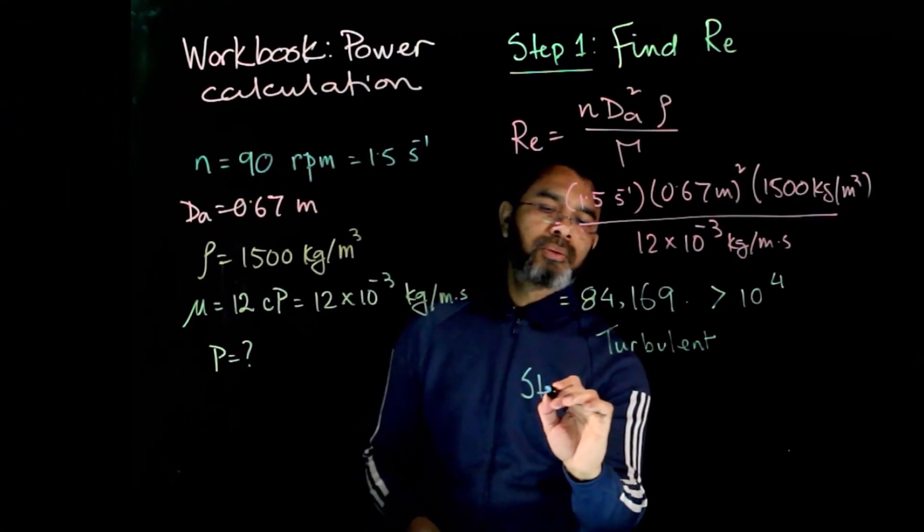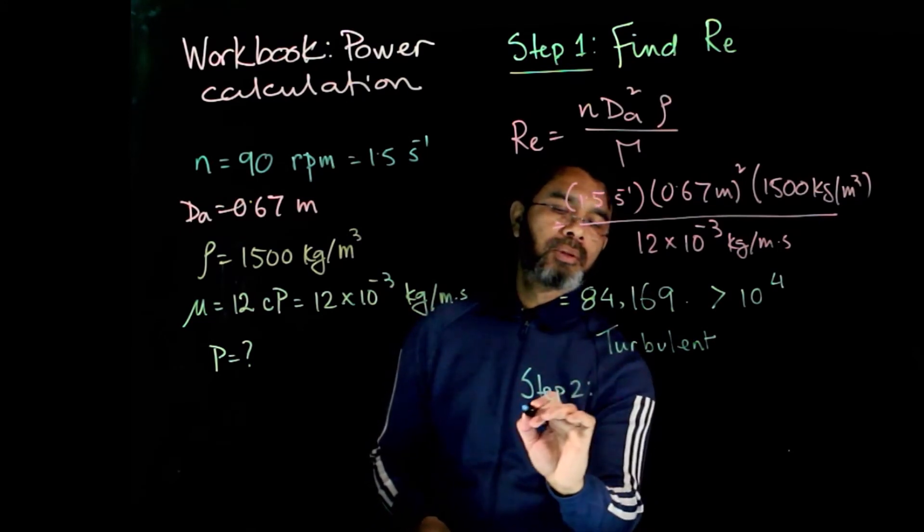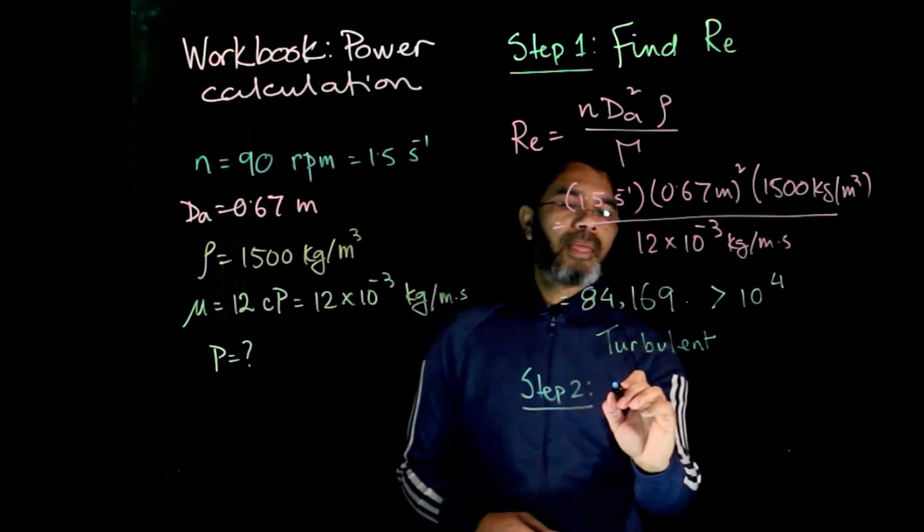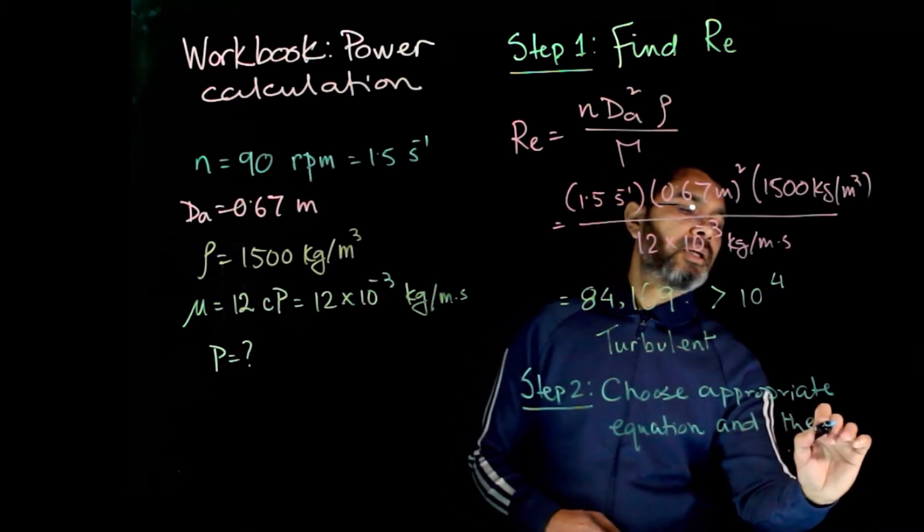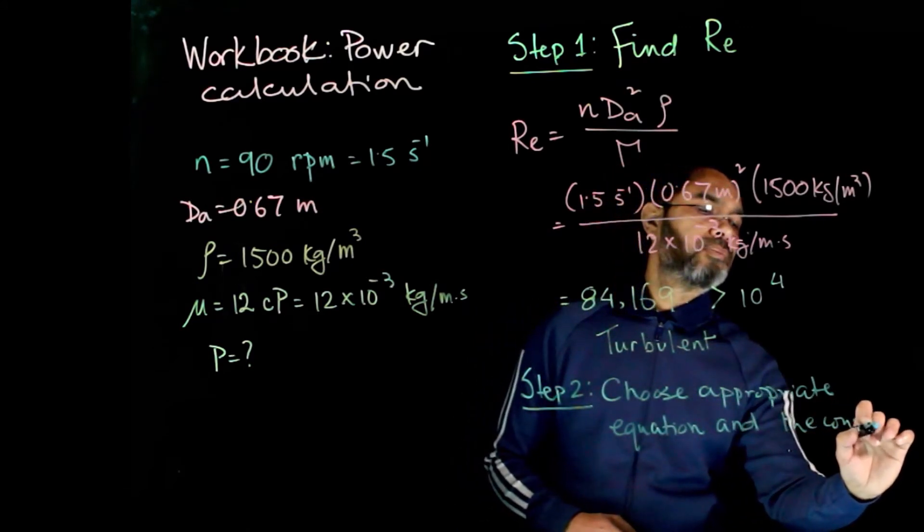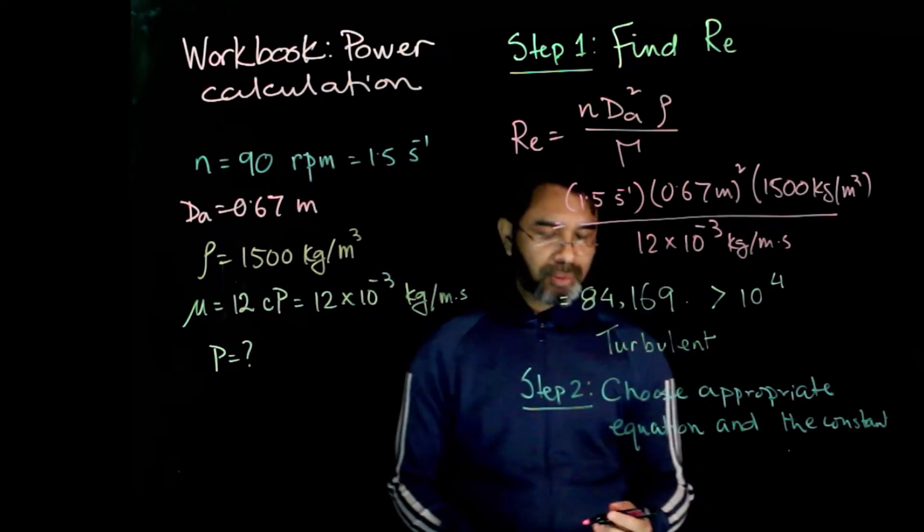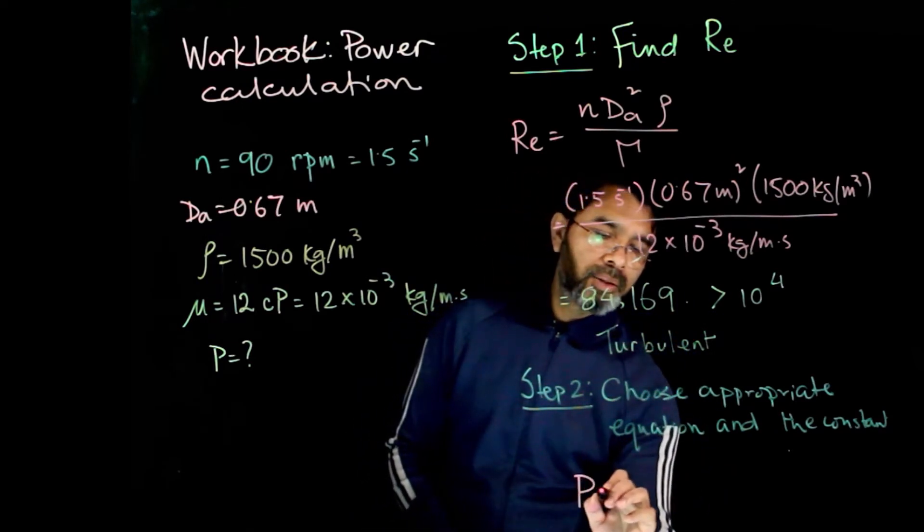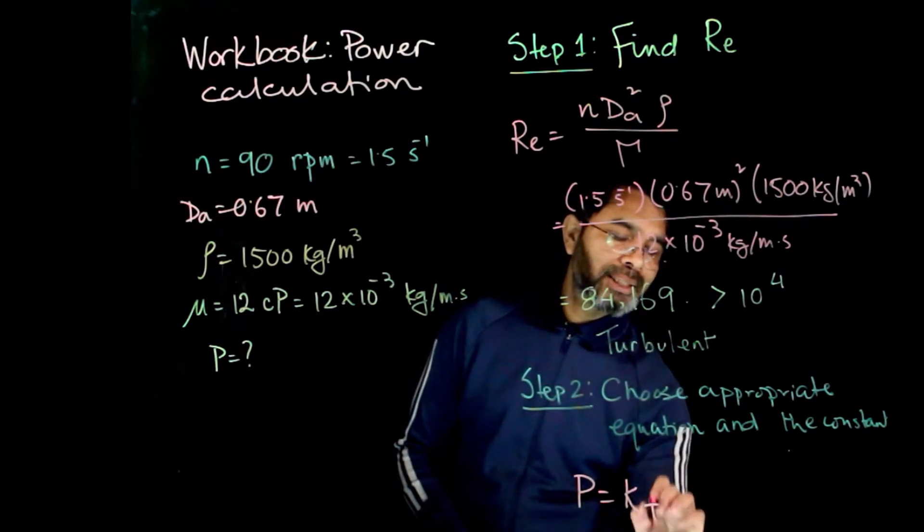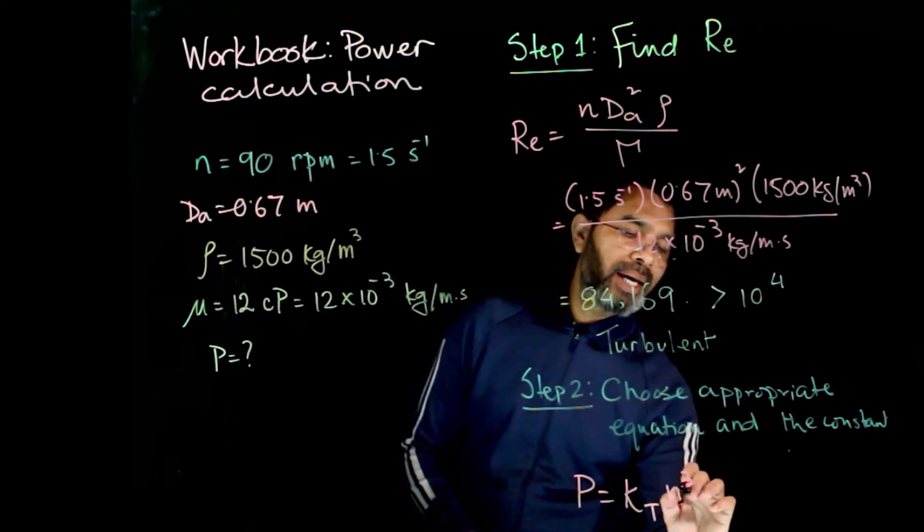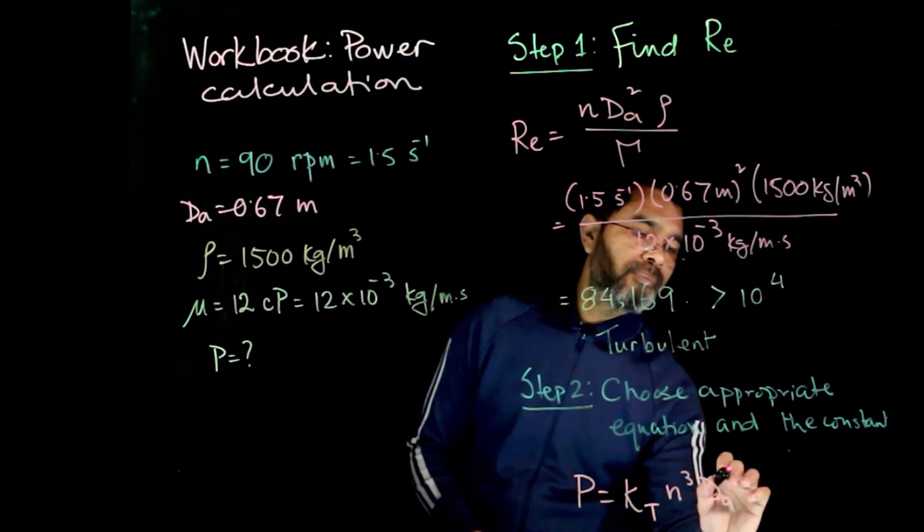Step 2 is to choose the appropriate equation and the constant. For our case, P = KT·N³·DA⁵·ρ.